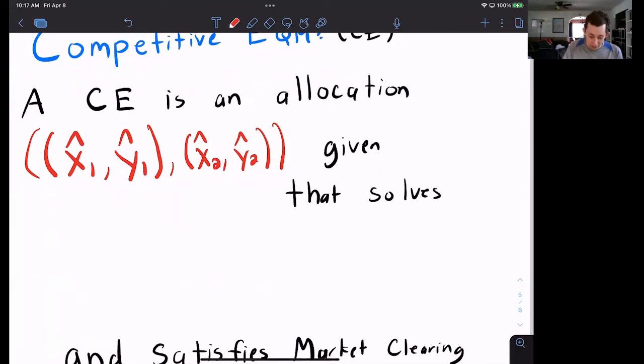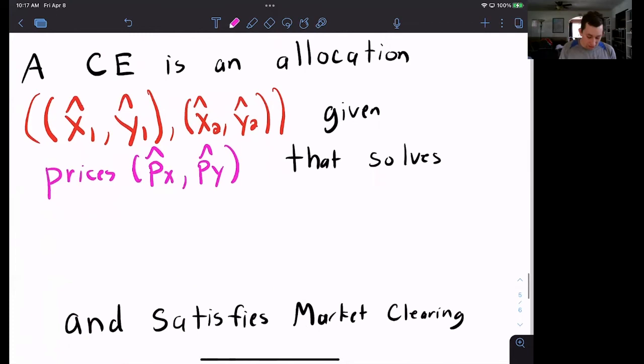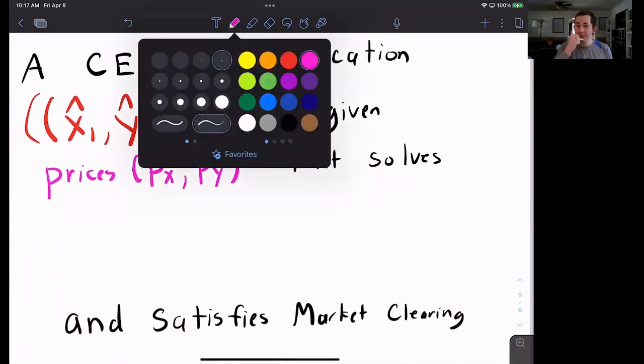It's given prices. That's the second part of the equilibrium. What are the prices in this economy? We have a price for X (Px) and a price for Y (Py). What does this allocation need to solve? We know it needs to be optimal and ensure market clearing.